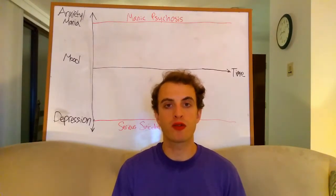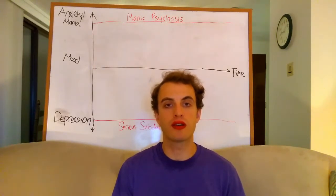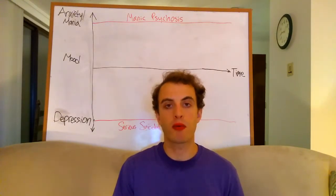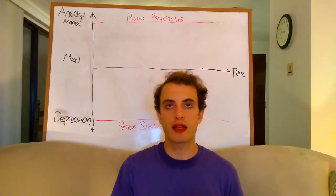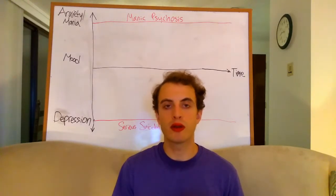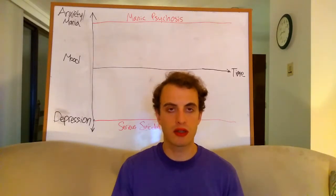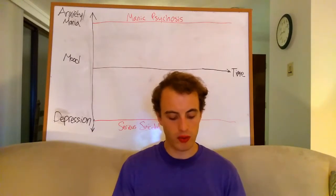First I'm going to read from the DSM-5 — this is the official criteria to diagnose people with bipolar. There are two kinds of bipolar: there's Bipolar 1, which is much more manic, and there is Bipolar 2, which has a lot more depression. But both can and often do have both manias and depressions, just varying.